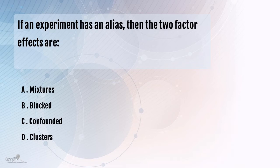If an experiment has an alias, then the two-factor effects are called as: mixtures, blocked, confounded, or clusters. What is the correct answer?